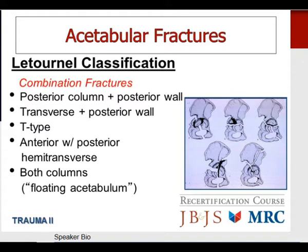Then there is the anterior with posterior hemitransverse, which can be thought of as a transverse with an anterior wall or anterior column — a quite rare type. And then there is the both-columns fracture, or the so-called floating acetabular fracture, where all portions of the acetabular articular surface are no longer connected to the axial skeleton.